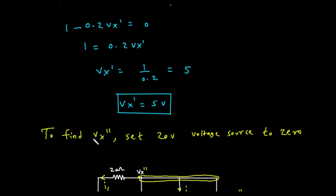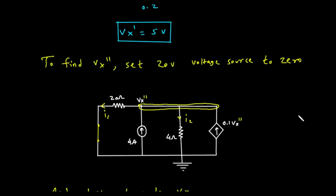Now for the second part of the problem, finding Vx double prime. To find Vx double prime, we set the 20 volt voltage source to 0 and keep the 4 amp current source active. Setting an ideal voltage source to 0 is equivalent to replacing it with a short circuit, or a simple wire. The dependent source will now have a value of 0.1 times Vx double prime.